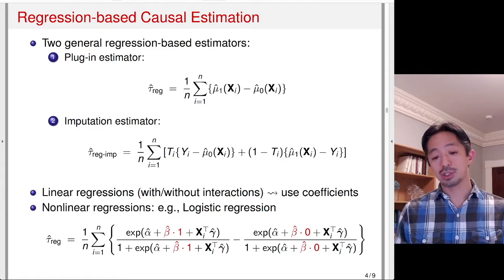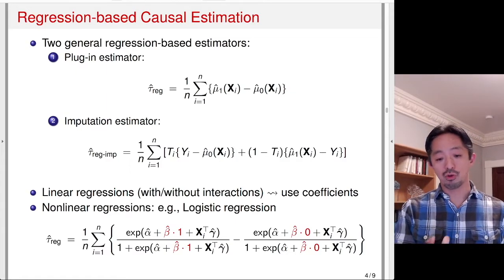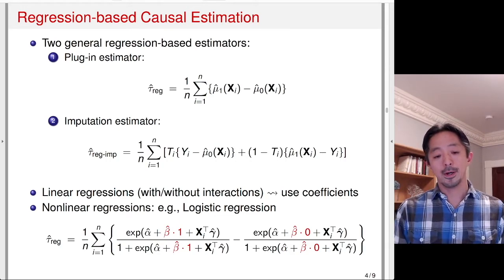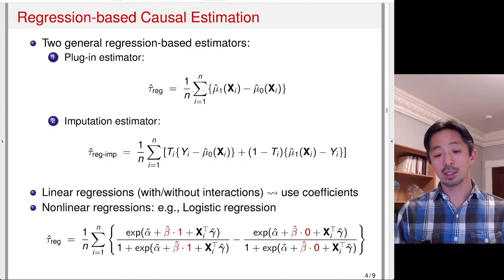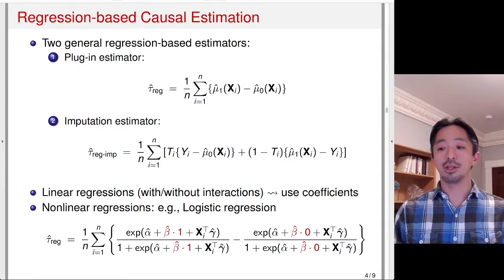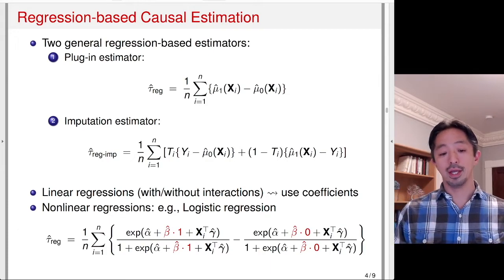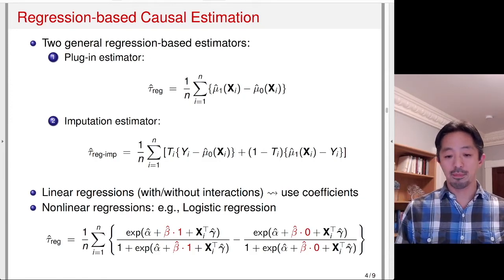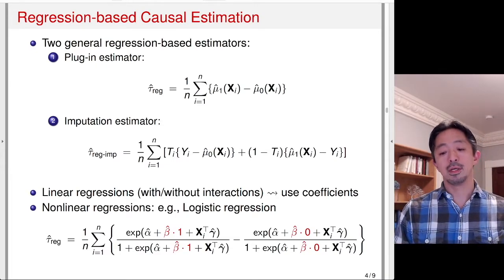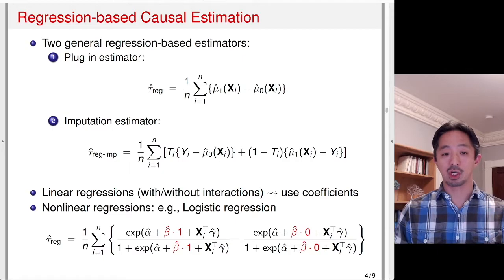For nonlinear regression, such as logistic regression, you have to do this computation for every single observation, which is more computationally intensive. For logistic regression, the plug-in estimator computes the predicted probability when T=1 minus the predicted probability when T=0, takes that difference for every observation, and then averages. You can use any kind of regression here — probit, multinomial logit, or even fancy machine learning models — to do this regression-based causal estimation.